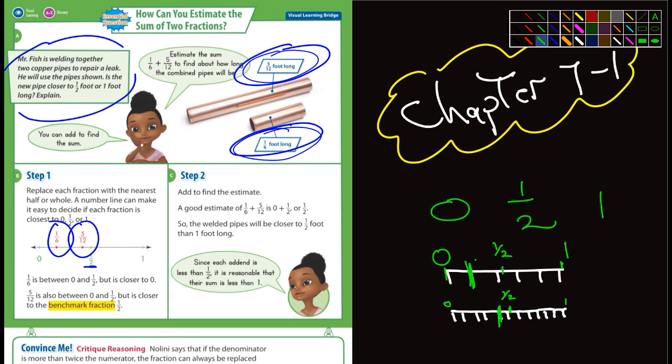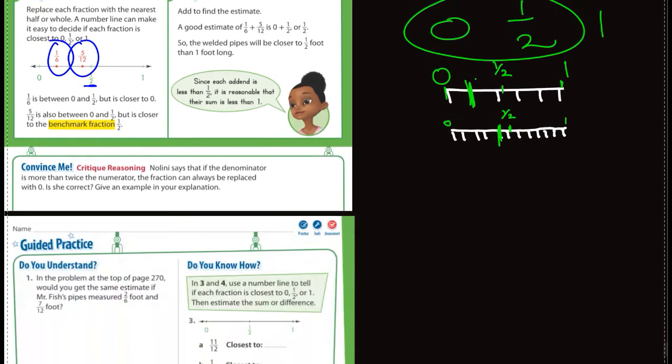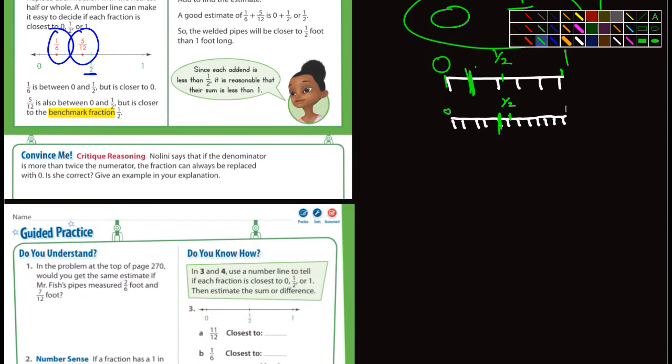So you could consider the five twelfths a half. And so if you add them together, a zero plus one half, what do you get? You get a half. So that's kind of what they're asking you to do in this section here. Let's jump to the next page.